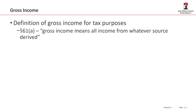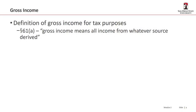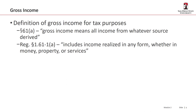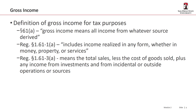Gross income is defined under Internal Revenue Code section 61 as 'all income from whatever source derived.' Learn it, know it, live it — it is an all-encompassing definition. The regulations under §1.61-1(a) clarify that this includes income realized in any form, whether money, property, or services. The regulations also tell us gross income means total sales less cost of goods sold, plus income from investments and incidental or outside operations. Notably, gross income is already net of cost of goods sold.